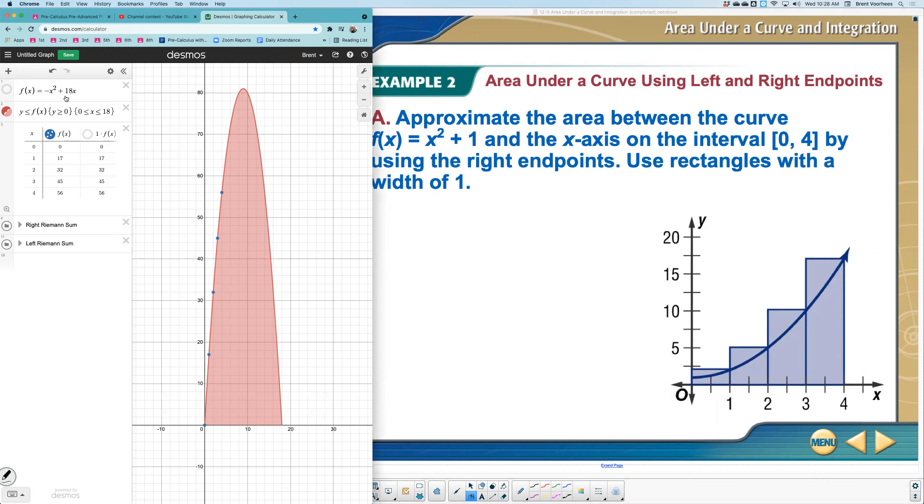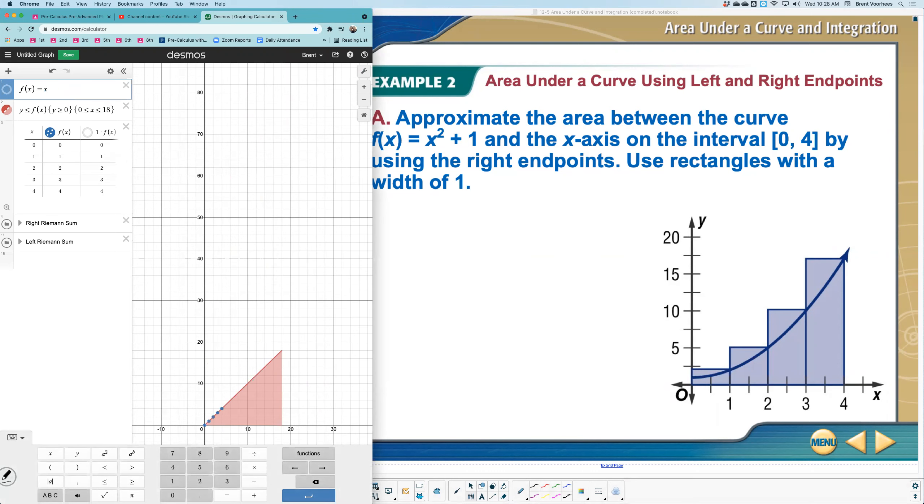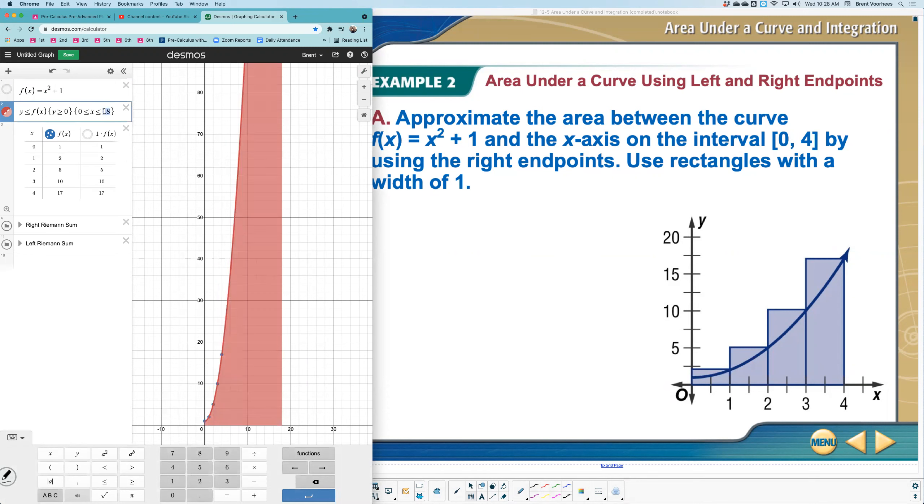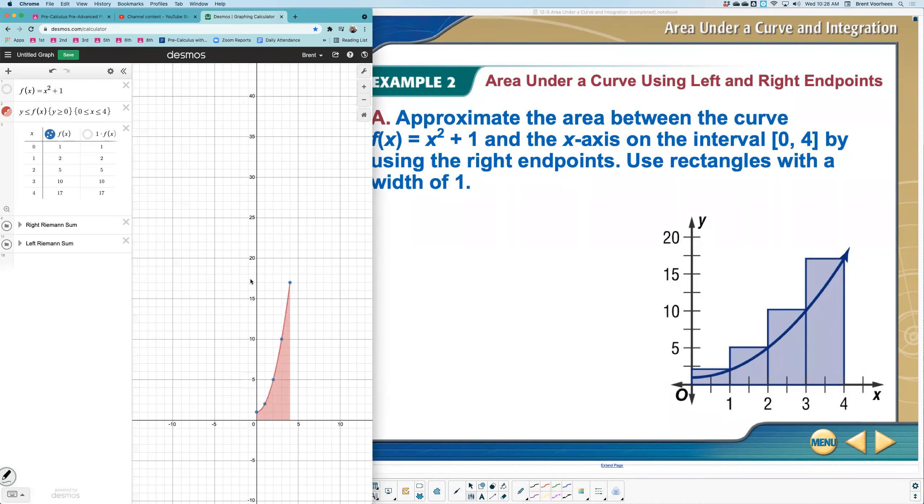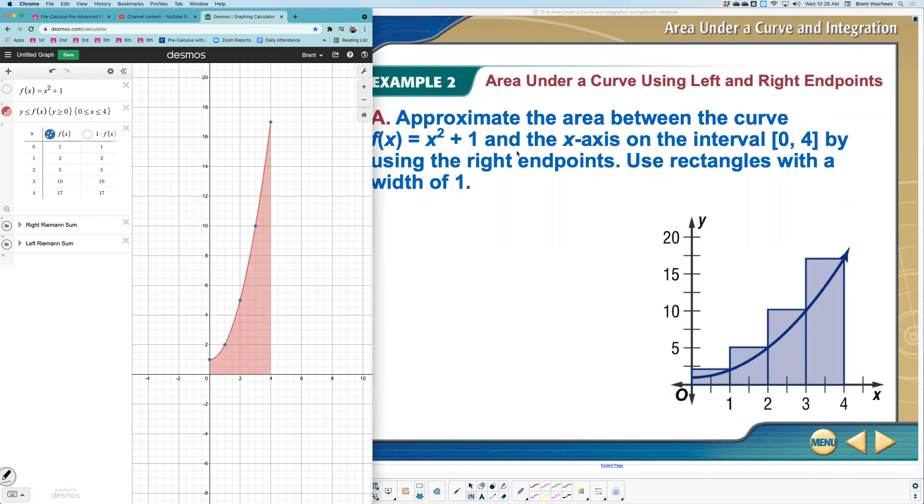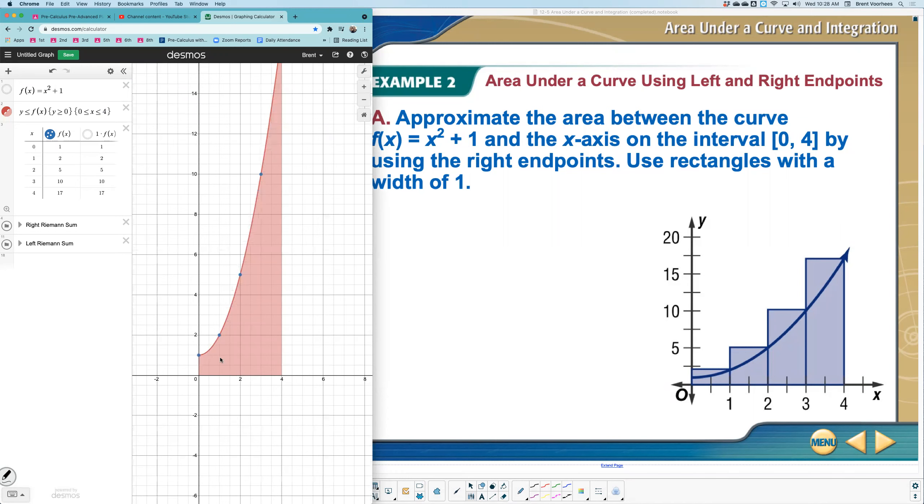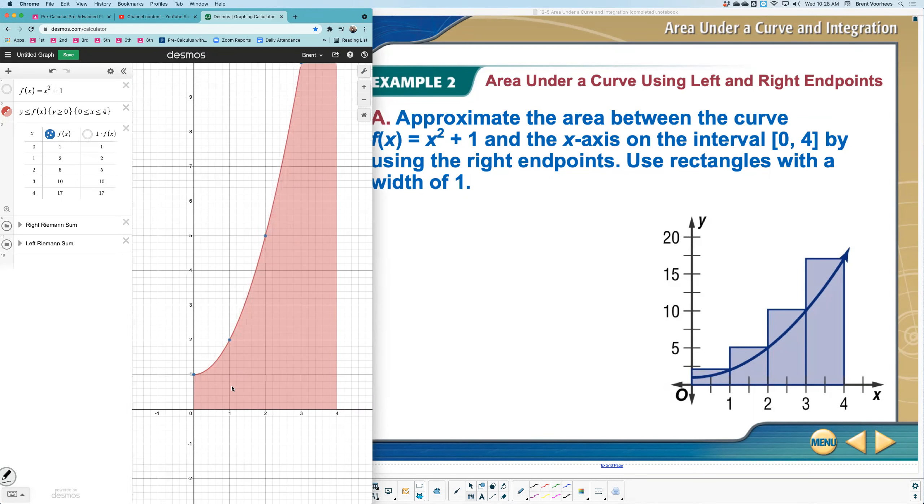So this time my function has changed. I'm going to come over here and change my function, and we're going to look at x squared plus one, and I'm only going to look from zero to four. So Desmos is now showing me exactly what we're looking at. It's this area. Here, let me zoom in.